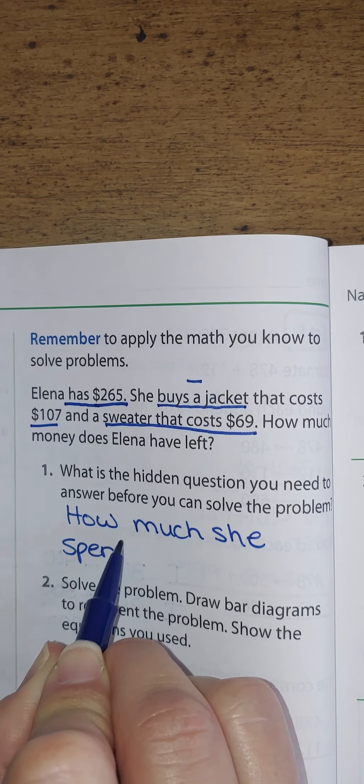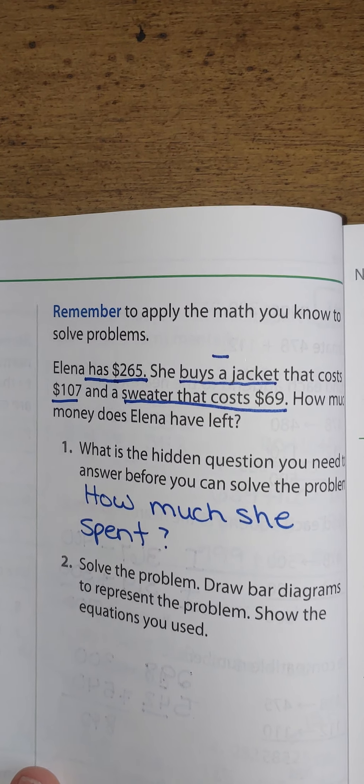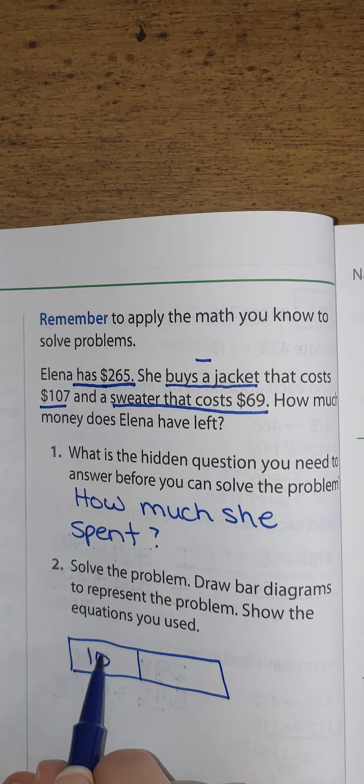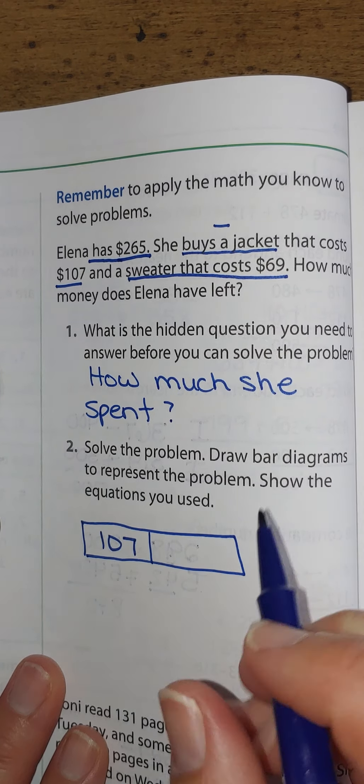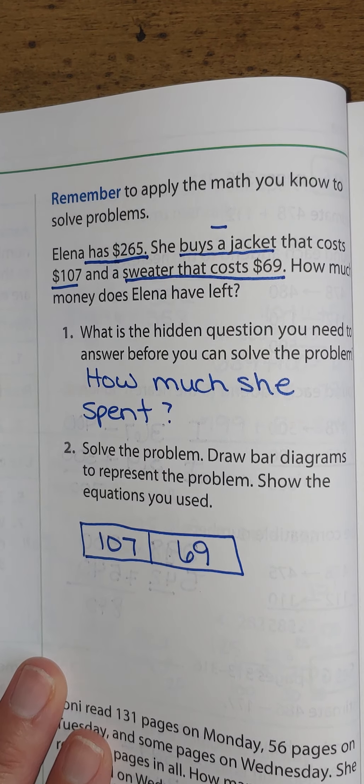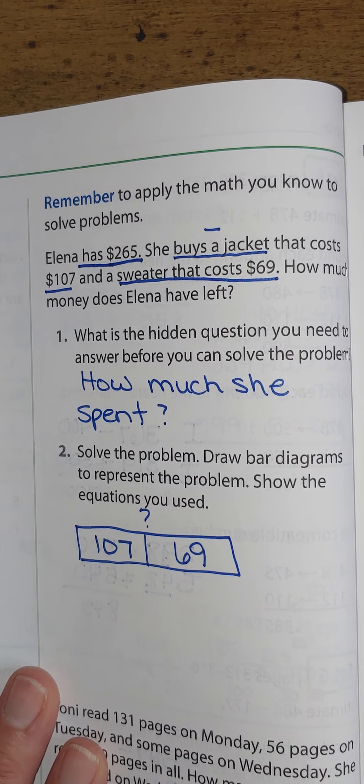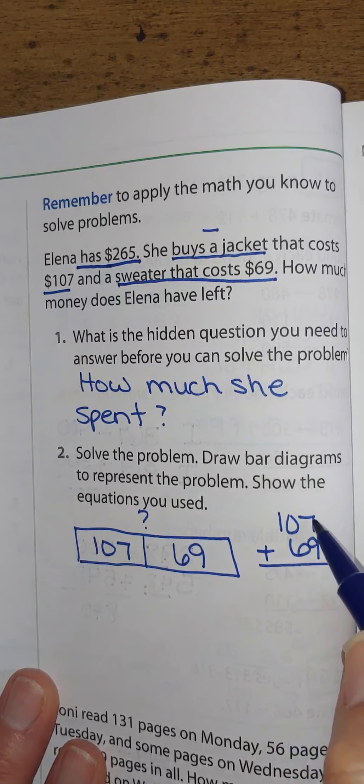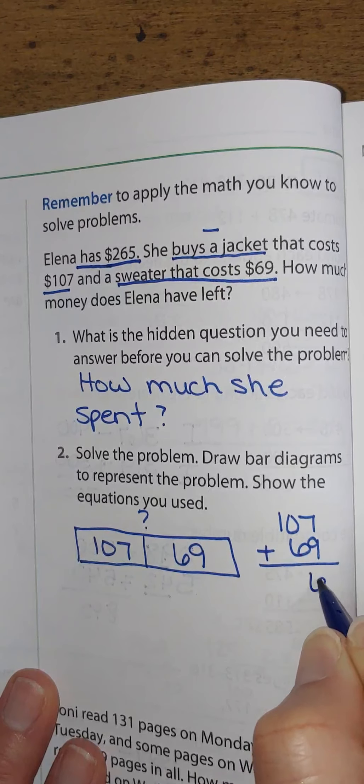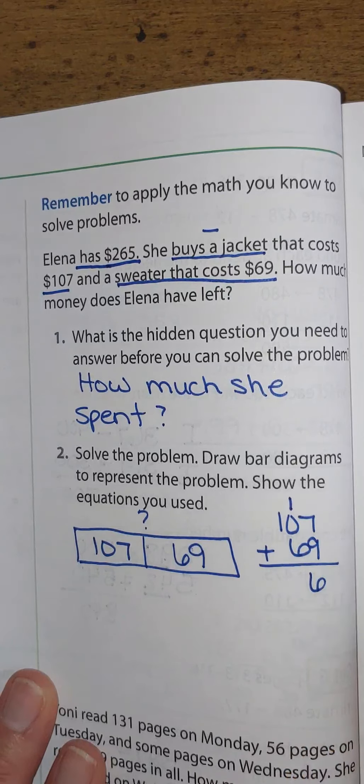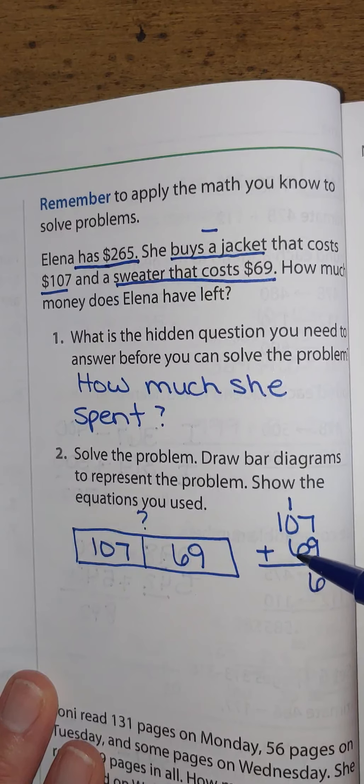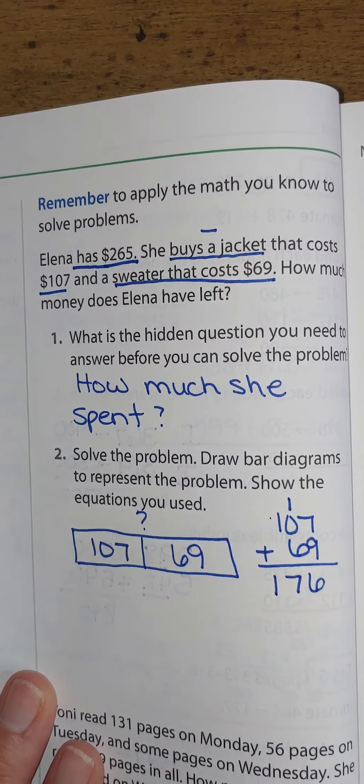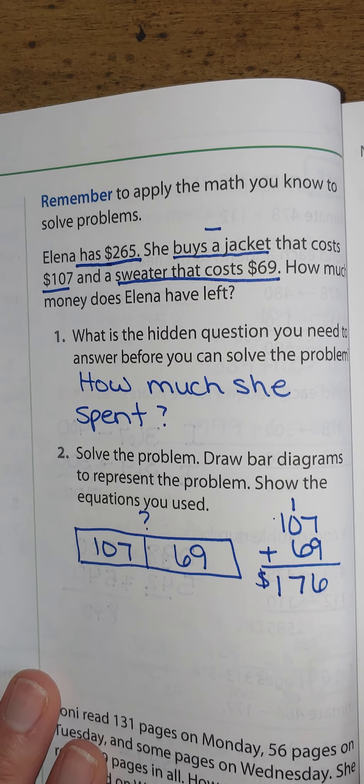How much money did she give to the cashier to buy her stuff? So let's draw our bar diagram first. On the left, let's put our jacket. It cost $107. And on the right, let's put our sweater that was $69. She has expensive taste. And what we're trying to find is how much did she spend altogether. So I'm going to show my work off to the side because we always want to show our work. 9 plus 7 or 7 plus 9 is 16. I put my 6 in the ones place and I carry my 10 to the tens place for 16. 10 plus 0 plus 60 or 1 plus 6 is 7 or 70. And then there's only one set of 100. So she spent $176 at the store.